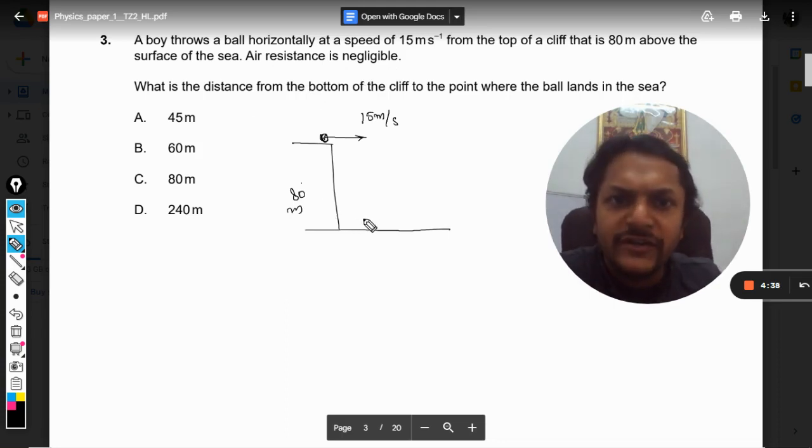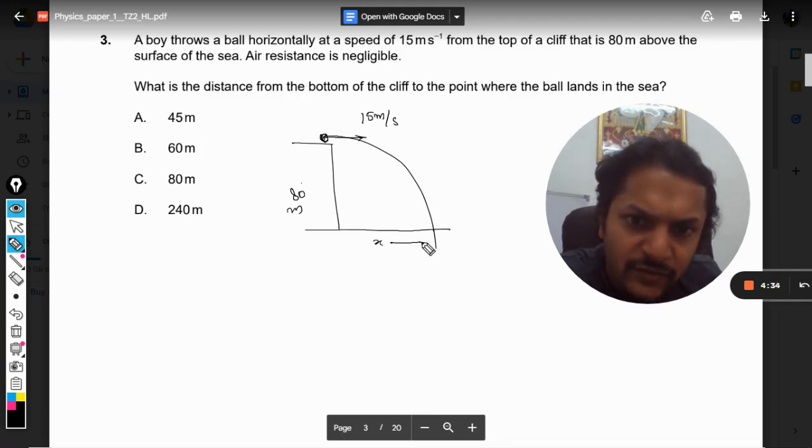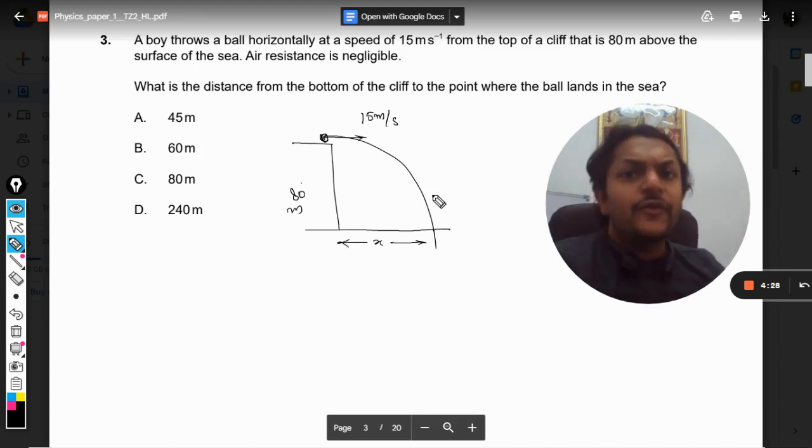This is what we are looking to find. This is the case of horizontal projectile, and what we know about this is that the vertical velocity initially is zero but finally it is not zero.